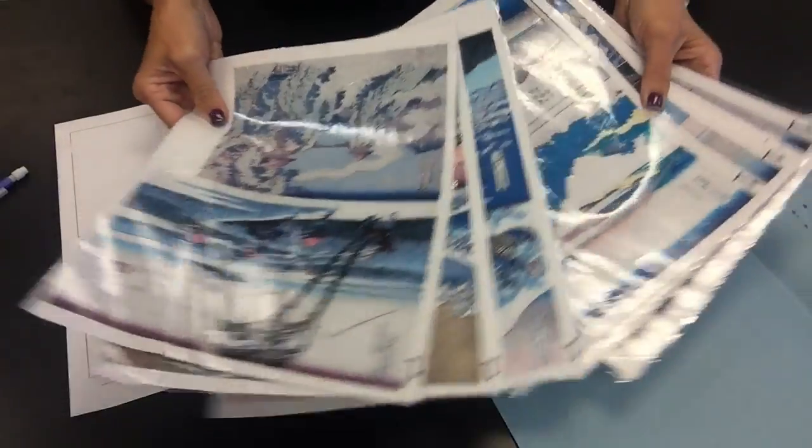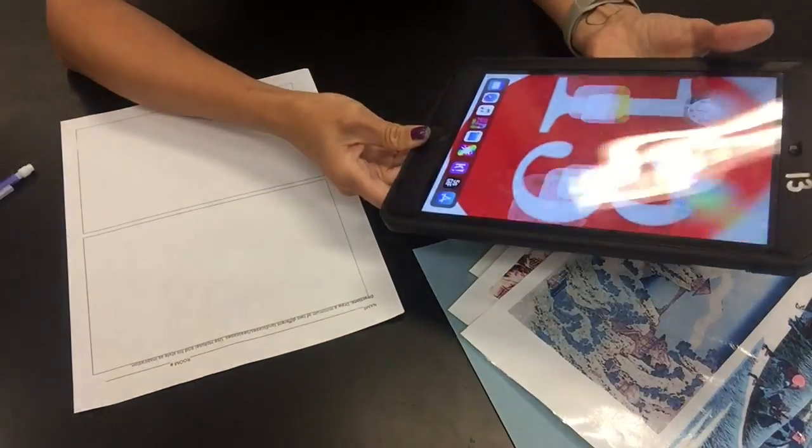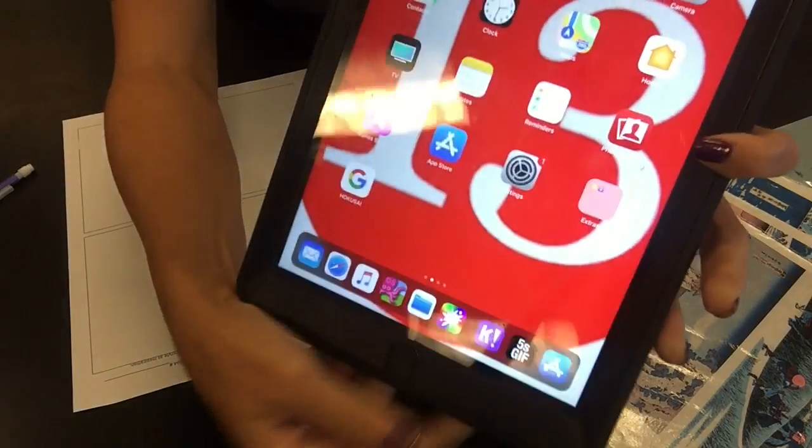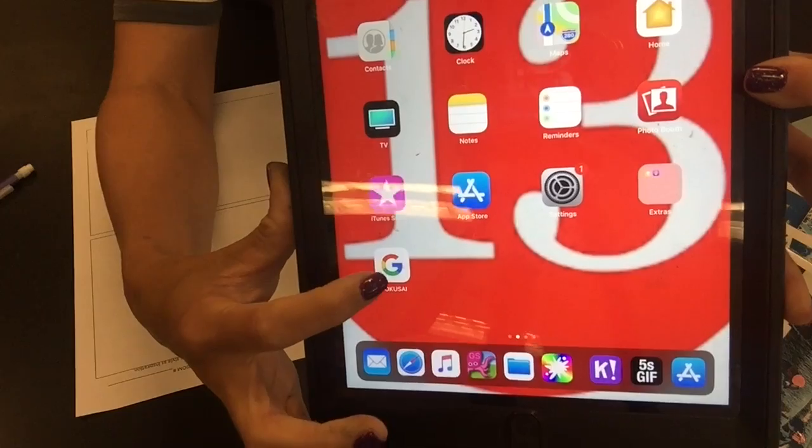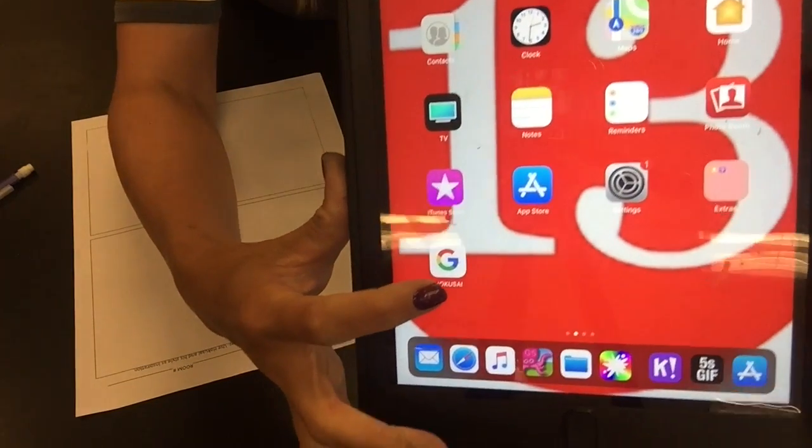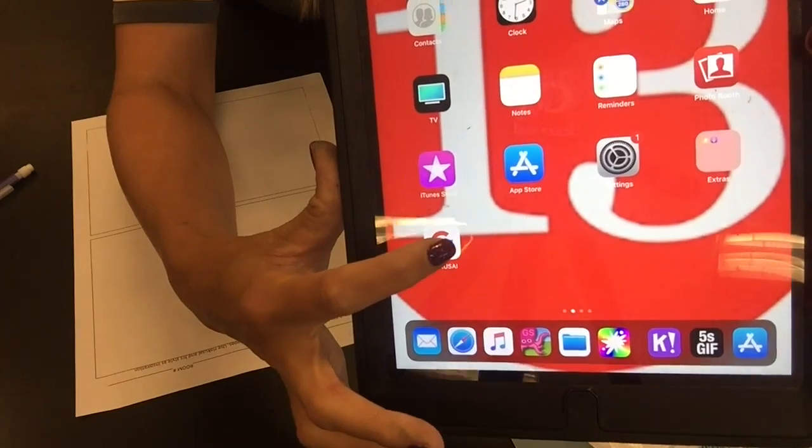And then I have all of these different images in the folders for you guys to look through. I also have on the iPads, I went and saved a Google app on the front page of all of the art room iPads and underneath it, it says Hokusai in all caps.